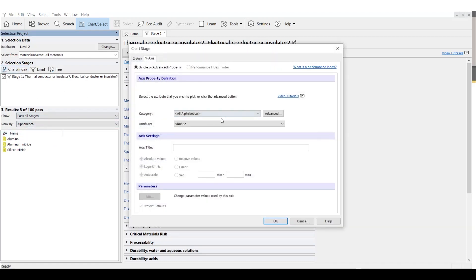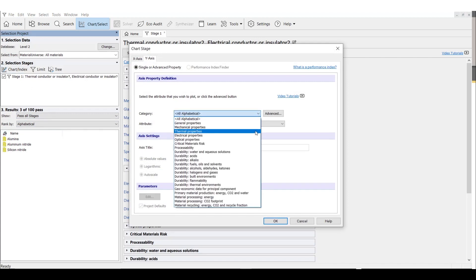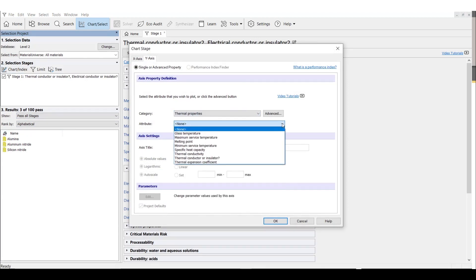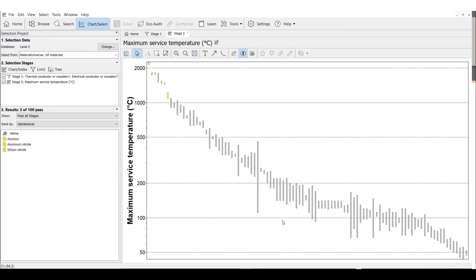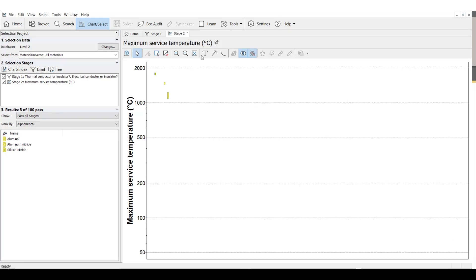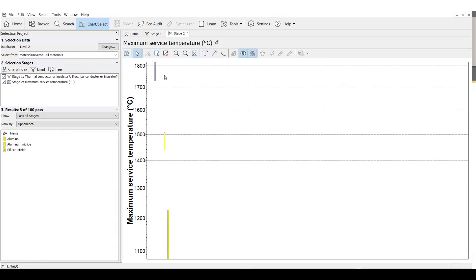Now, we need to rank these three materials to determine which one has the highest maximum service temperature. To do this, we'll use a property chart with maximum service temperature on the y-axis. After removing our unsuitable materials and auto-scaling the chart, we can pretty easily see which material maximizes our property, aluminum nitride.